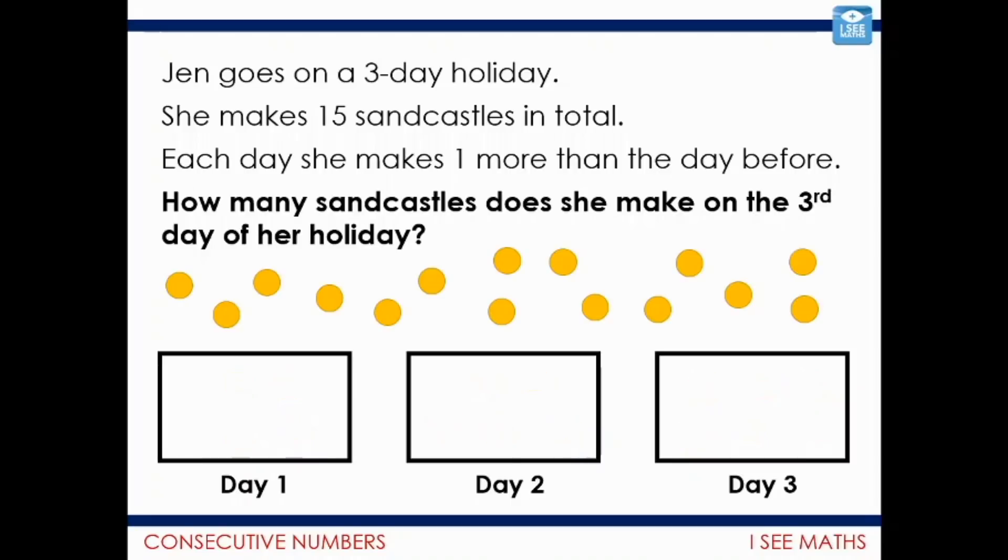There's another way you could have gone about this, though. We could have thought, well, I don't know how many we started with, but I know on the second day we made one more than day one, and on the third day we made two more than day one. So, there's almost three to add, and then we need to share the rest out in a way that's fair. Now, of course, that is 12 sandcastles left to split between the three days, which, of course, will be an additional four on each day. So, again, day one, four, day two, five, and day three, six. I should say, the answer to the question, how many sandcastles does she make on the third day of her holiday? Well, of course, that will be six.